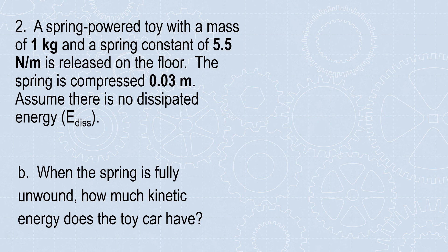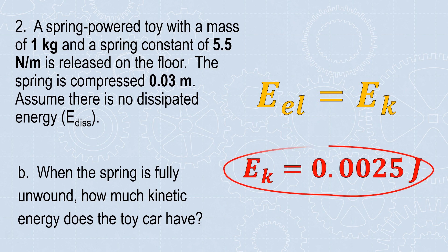When the spring's fully unwound, how much kinetic energy does the toy car have? Well, we know nothing's dissipated. So all of my energy before equals all of my energy after. So my elastic energy is 0.0025. So my kinetic energy is 0.0025. I put in a little bit of energy, so I'm going to get out a little bit of energy. That means I can expect a very small velocity.